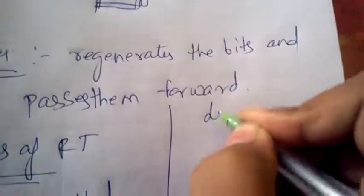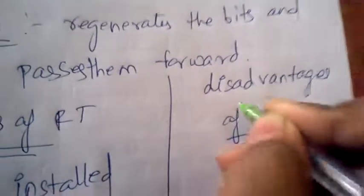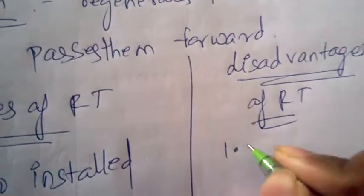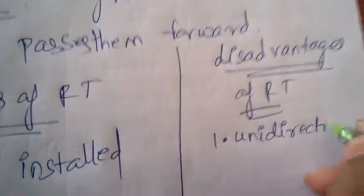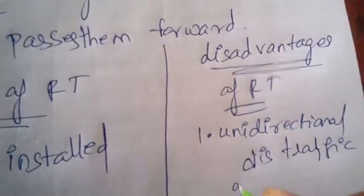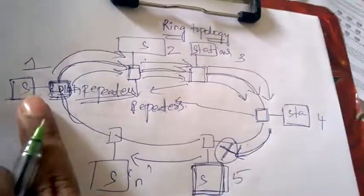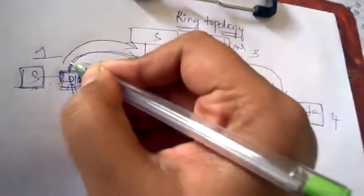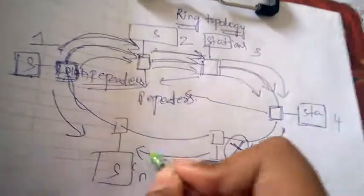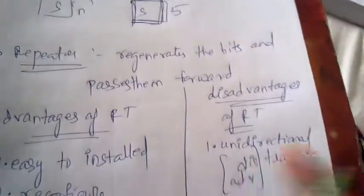Now the disadvantages of ring topology. The first disadvantage is unidirectional traffic. If I want to transfer information from station 1 to station 3, it can only go in one direction. It cannot go in both directions simultaneously, so all devices have only one path available.